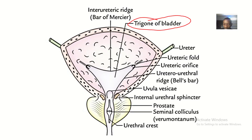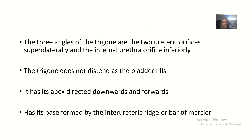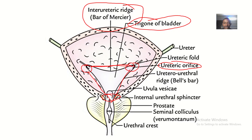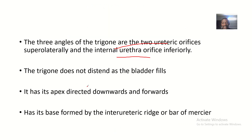The three angles of the trigone are: the two ureteric orifices superolaterally, and the internal ureteral orifice inferiorly. You can see one ureteric orifice here and one here, and coming down we have the internal ureteral orifice. Connecting these forms the apex of the trigone. The line that connects the two ureteric orifices is called the inter-ureteric ridge, or the bar of Mercier.